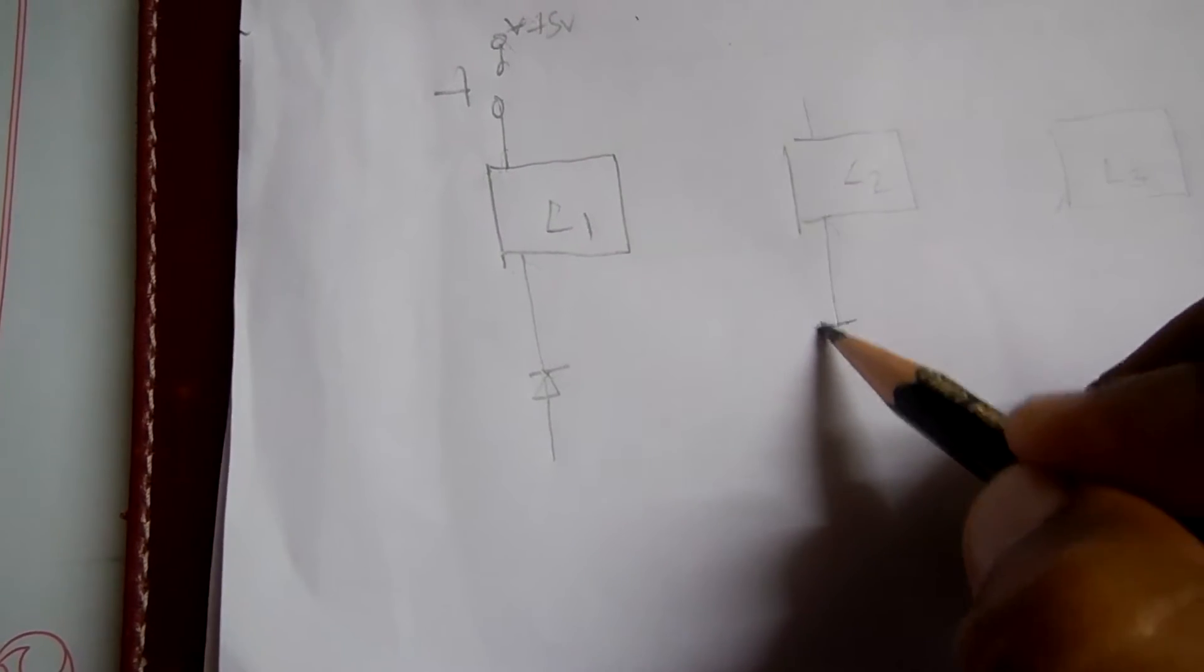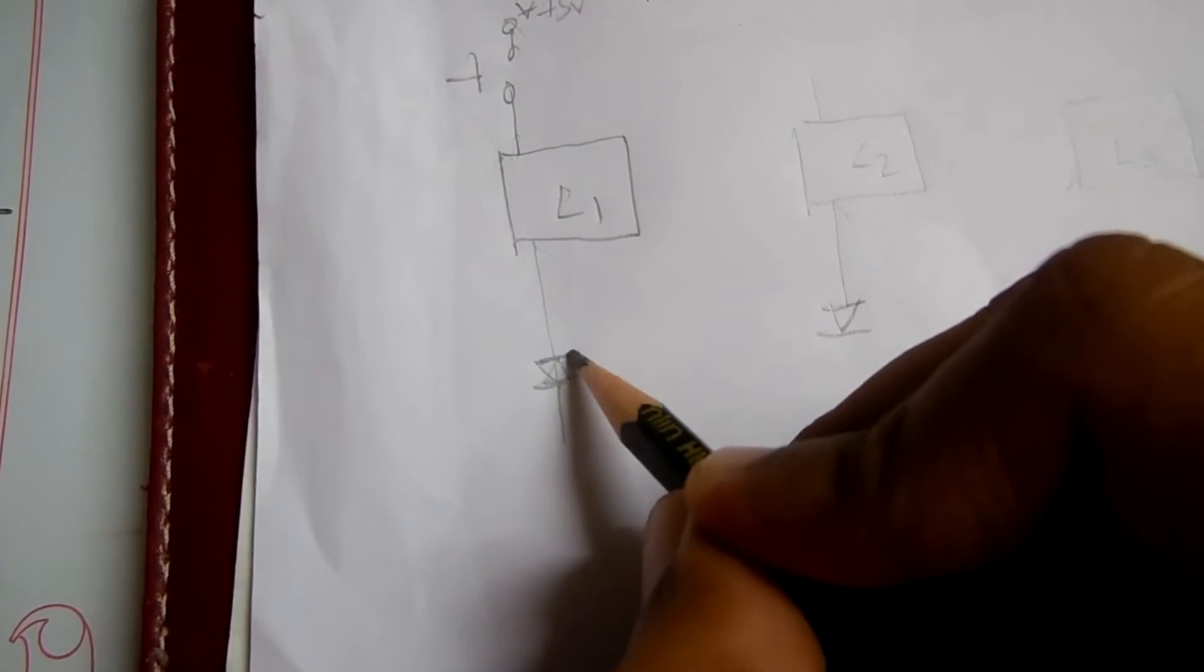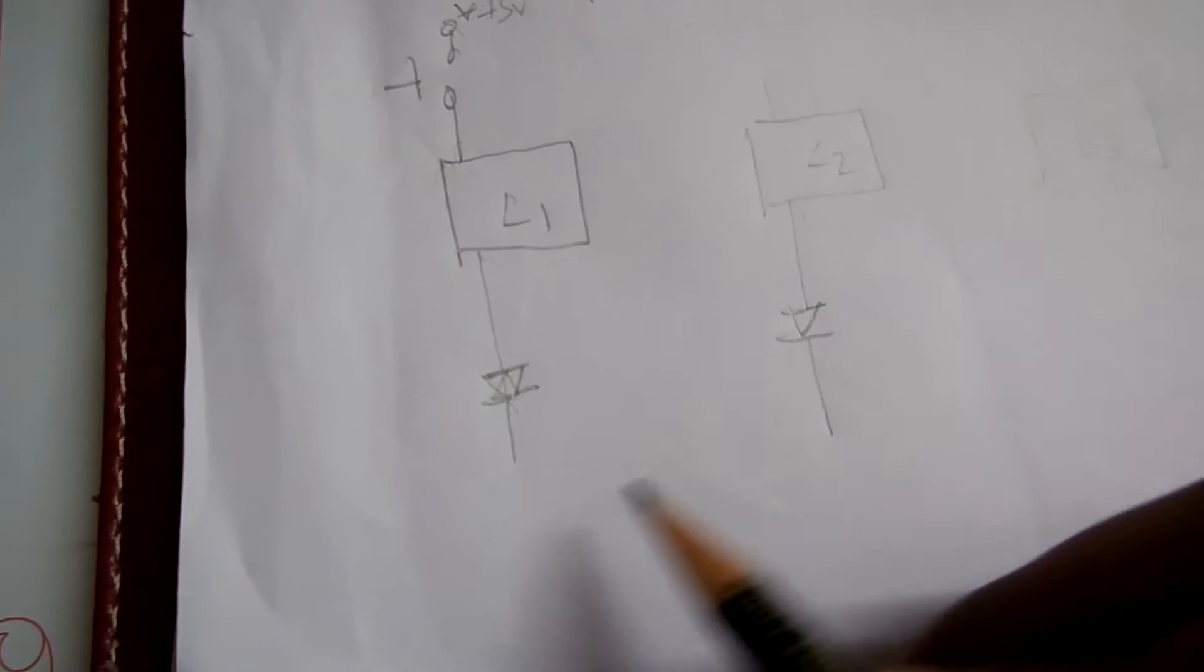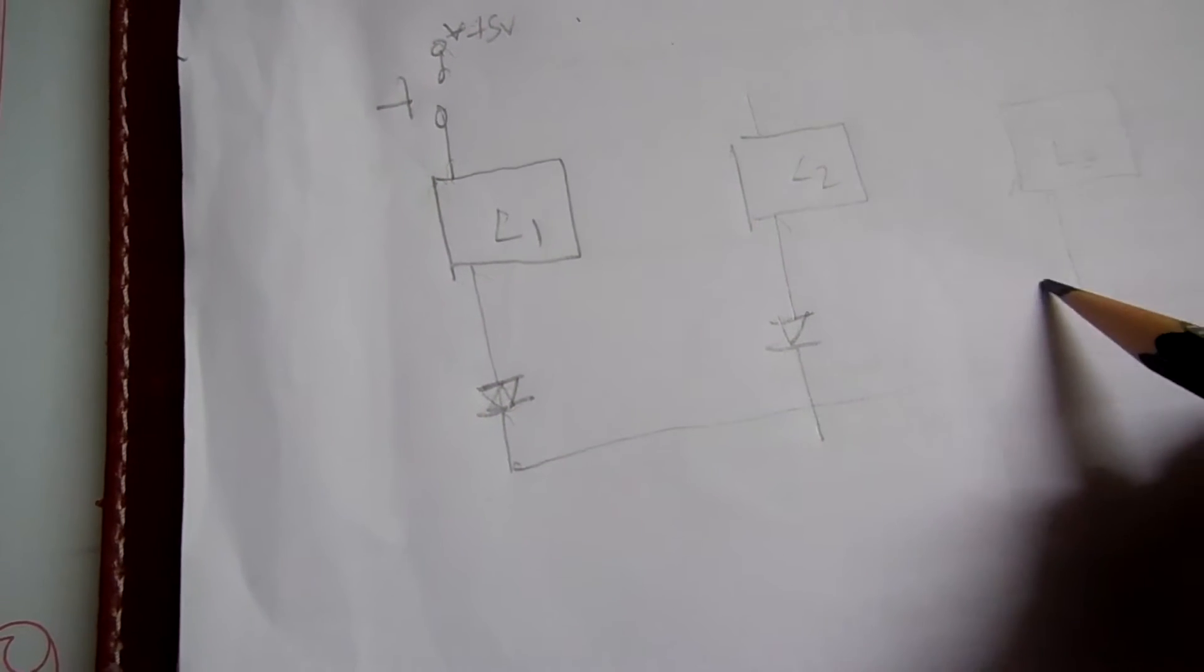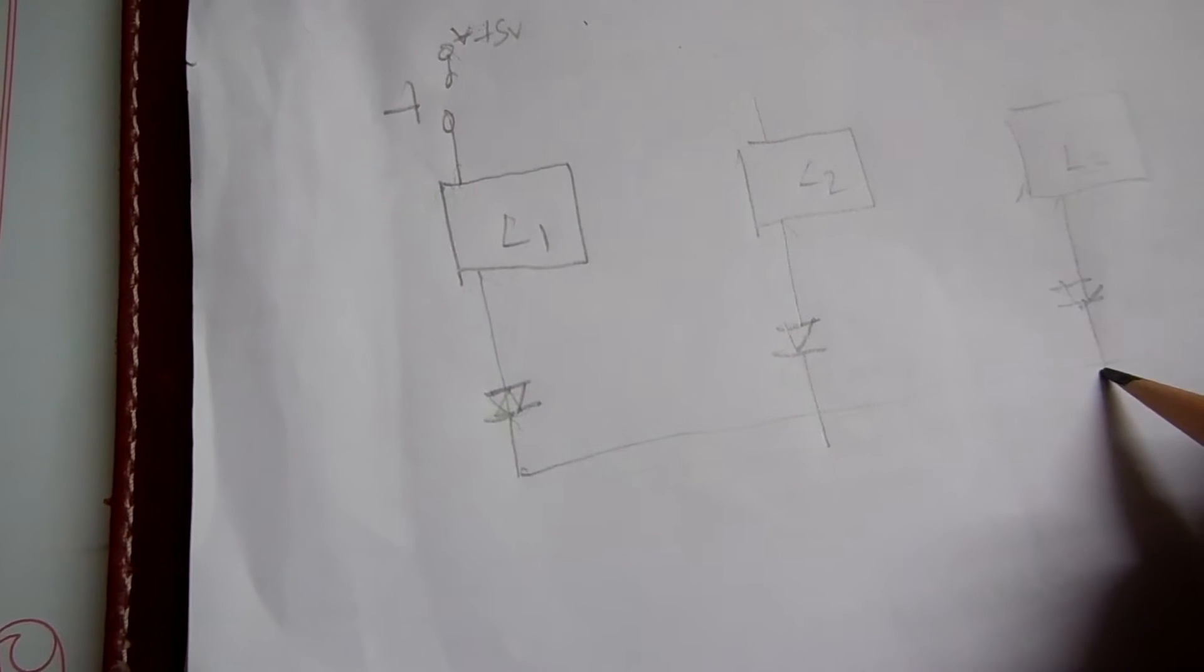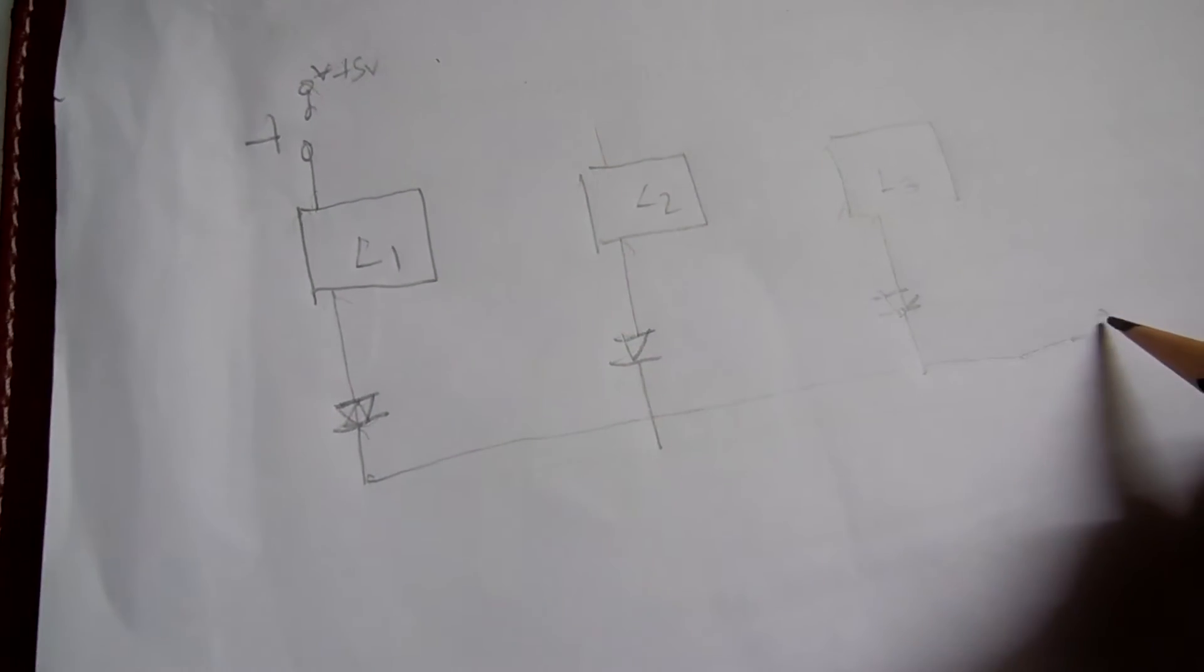Now we are using this diode so that none of them interfere with each other. The diode only allows negative pulses to go through. So here is our button.